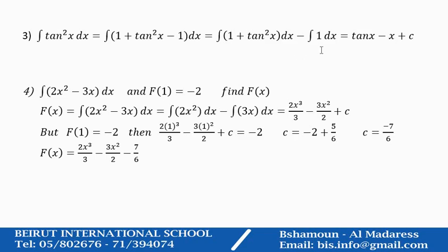And the integration of 1 is x plus c. The fourth example: find the integration of 2x squared minus 3x dx; we know F(1) equals minus 2, and we are asked to find F(x). Big F(x) is the original function, and 2x squared minus 3x is small f(x). So the original function is the integration of small f(x) dx — you find the integration as we did before, and you end up with big F(x).